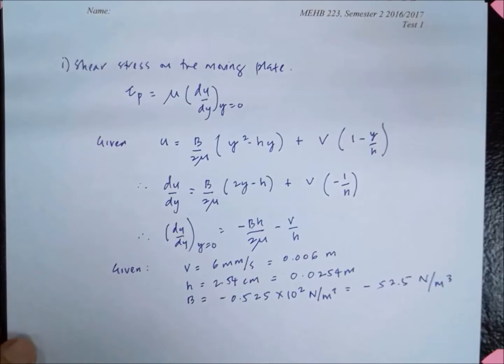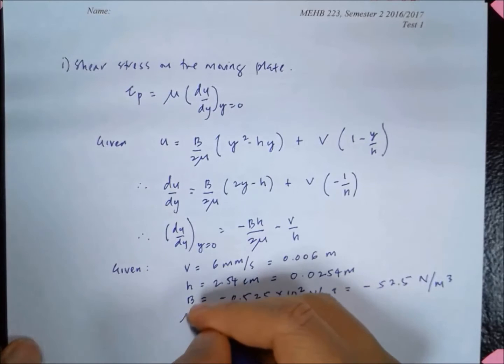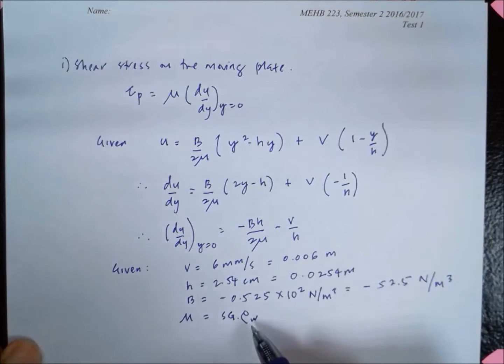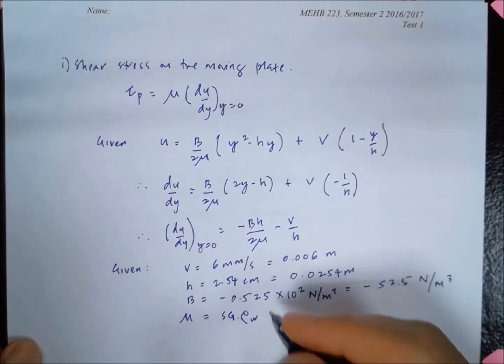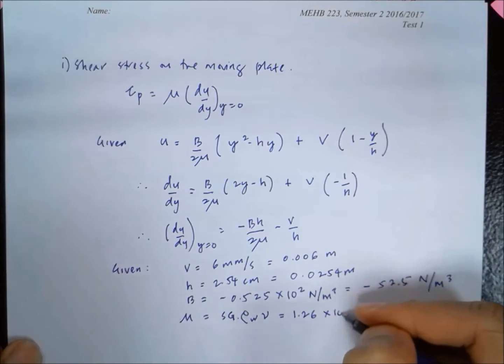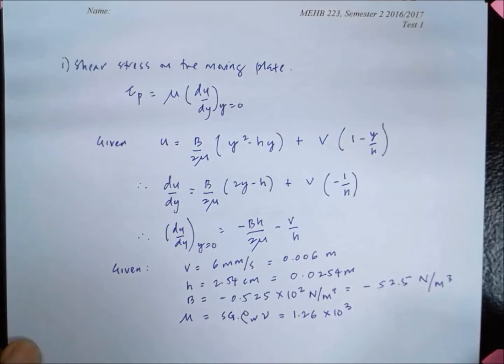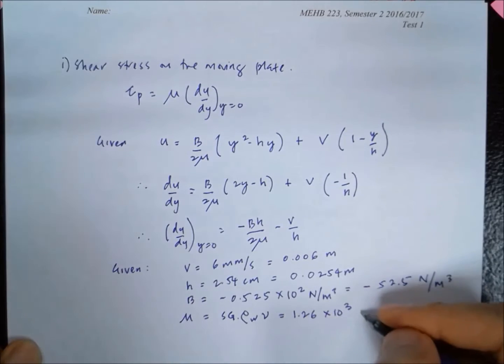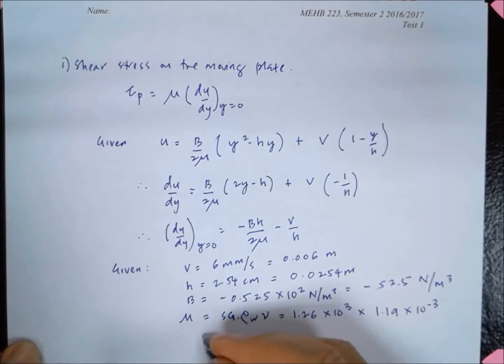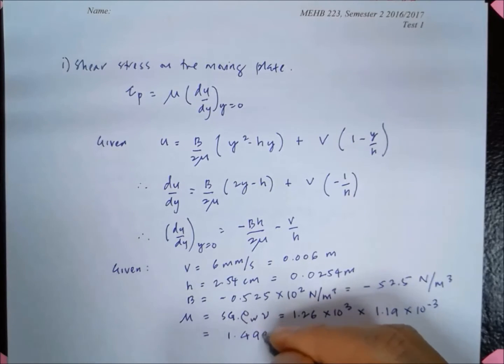The value of mu, the dynamic viscosity, is just equal to the specific gravity multiplied by rho of water, which gives the density of the fluid, multiplied by nu. So that is 1.26 times 10³, the density of water, multiplied by 1.19 times 10⁻³. This gives us viscosity equal to 1.4994 newton second per meter squared.